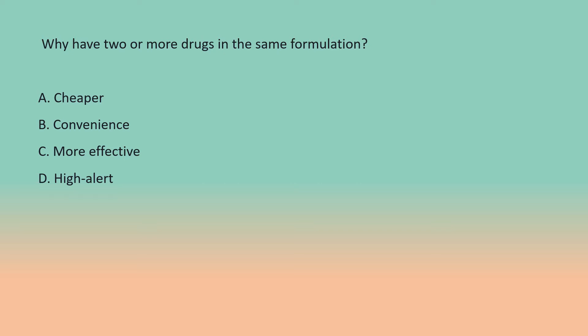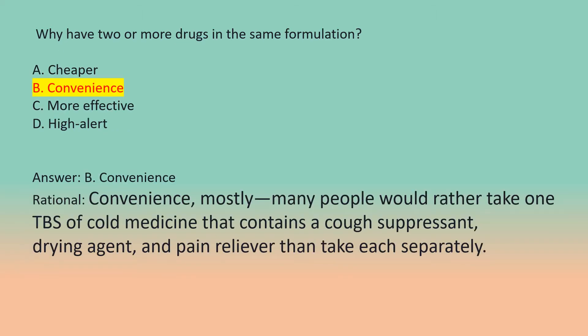Why are two or more drugs combined in the same formulation? A. Cheaper. B. Convenience. C. More effective. D. High alert. Answer: B. Convenience. Rationale: Convenience — mostly. Many people would rather take one tablespoon of cold medicine that contains a cough suppressant, drying agent, and pain reliever than take each separately.